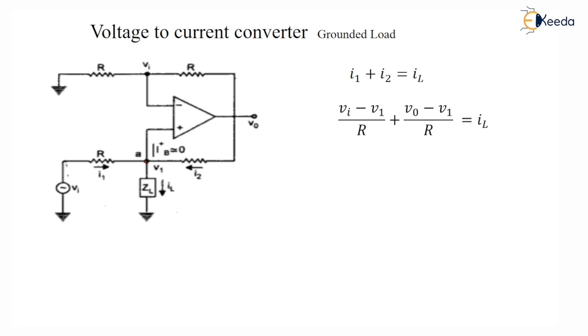We know this I1 is current flow due to potential difference at these two points: VI minus V1 divided by R. And I2 is current due to potential difference of Vout minus V1 divided by R.